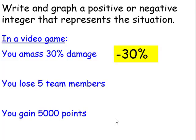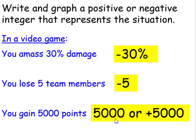If you lose five of your teammates, this would be a decrease of five team members. If you gain 5,000 points, it would be 5,000 or a positive 5,000.